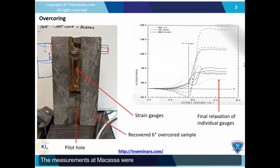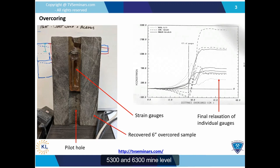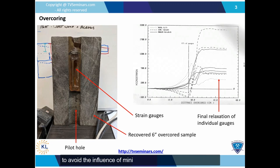The measurements at Macassa were taken during the development of No. 3 shaft, which was to reach a depth of 7,000 feet. The future shaft location was already accessible from the 5,300 and 6,300 mine levels, which was where the measurements were taken. These locations were as far as possible from the extracted areas to avoid the influence of mining-induced stresses on the results.